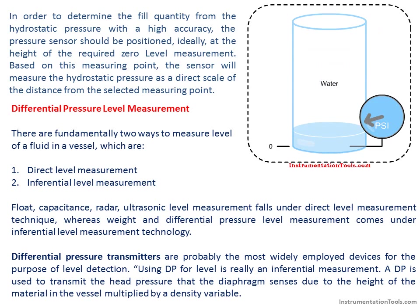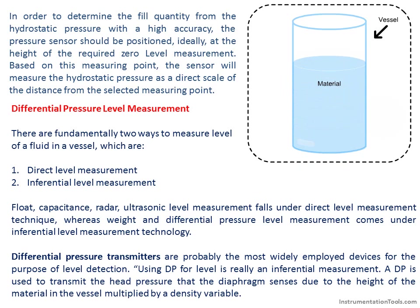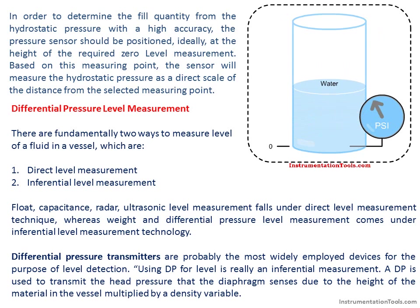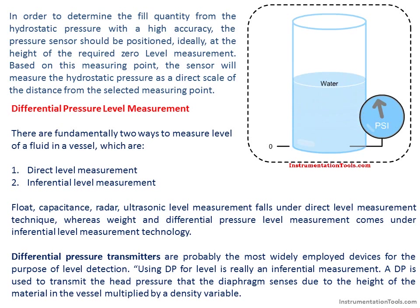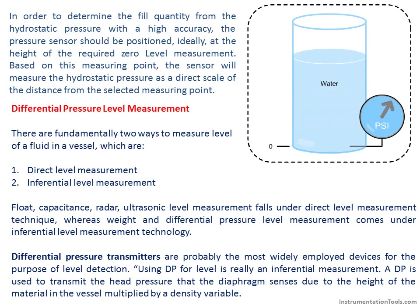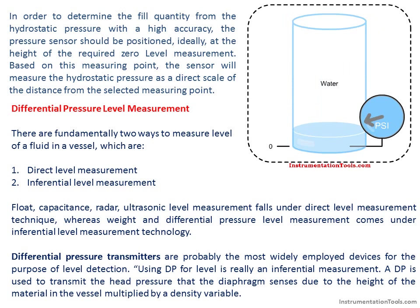There are fundamentally two ways to measure the level of a fluid in a vessel: direct level measurement and inferential level measurement. Float, capacitance, radar, and ultrasonic level measurement fall under direct level measurement, whereas weight and differential pressure level measurement come under inferential level measurement technology.